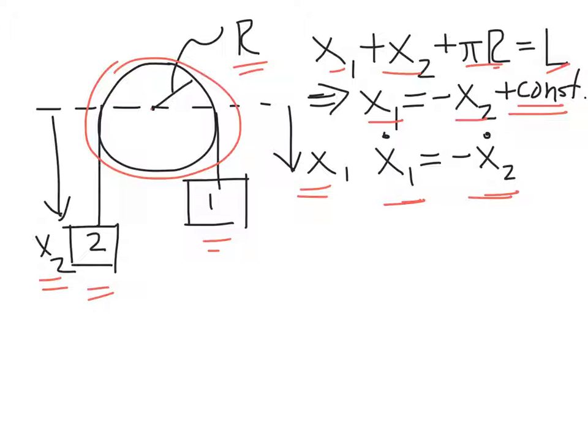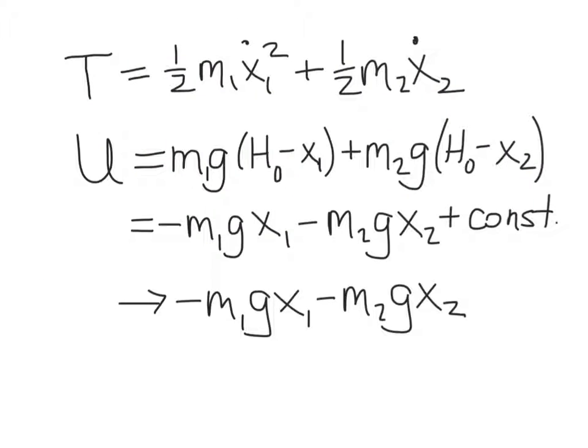So now this allows us to write the kinetic and potential energies of both masses, which is what we need in order to apply the Euler-Lagrange equation in Lagrangian mechanics. The kinetic energy is the sum of kinetic energies for each of the masses. So we've got 1 half m1 x1 dot squared, 1 half m2 x2 dot squared. We will ignore the motion of the pulley, or at least its contribution to the energies in the system, so we don't have to worry about its rotational kinetic energy.